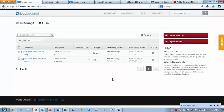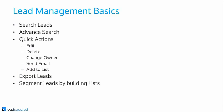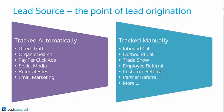I'll talk about some advanced scenarios later. Let me go back to the presentation. Having covered lead capture, lead addition, and list creation, let's talk about some very important attributes of the lead. There are four: lead source, lead score, lead stage, and lead grade. Let me talk about each.